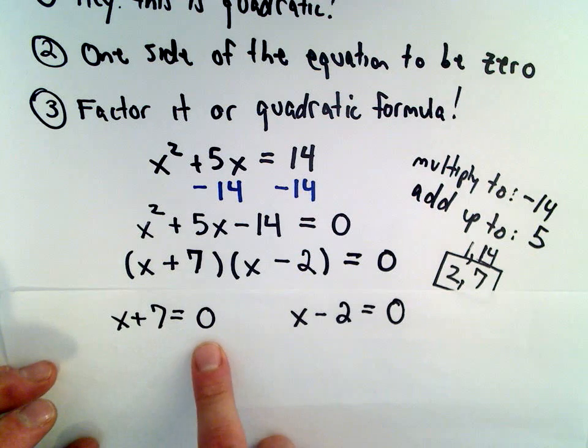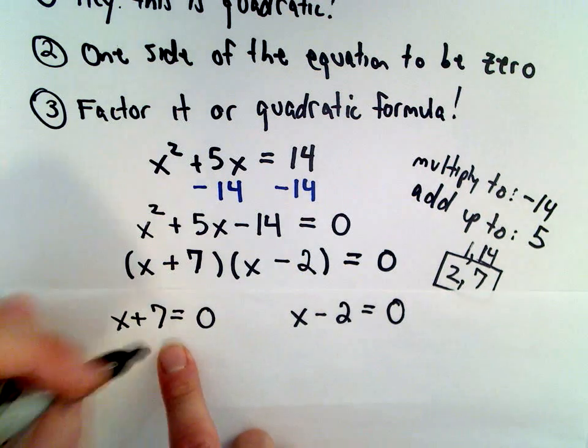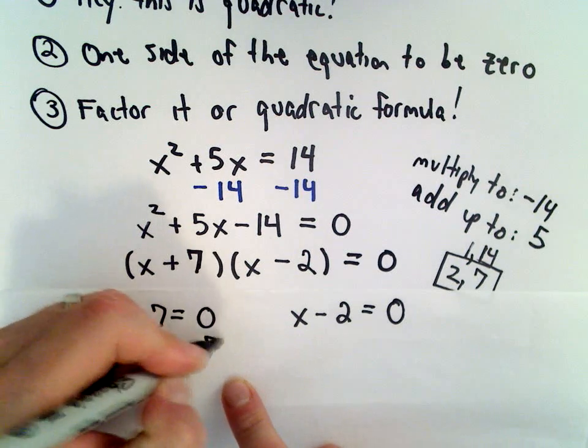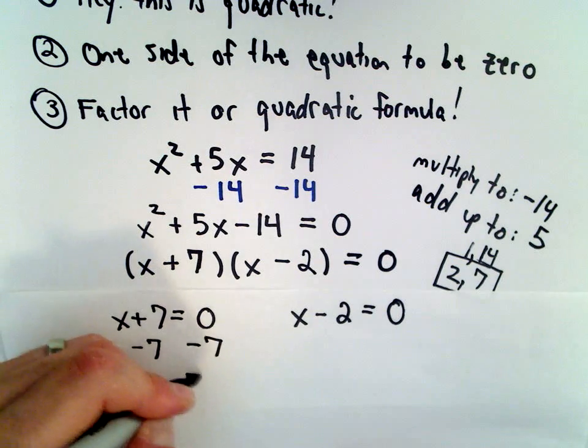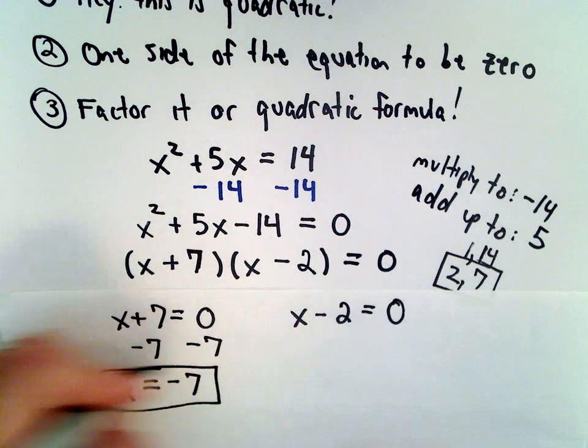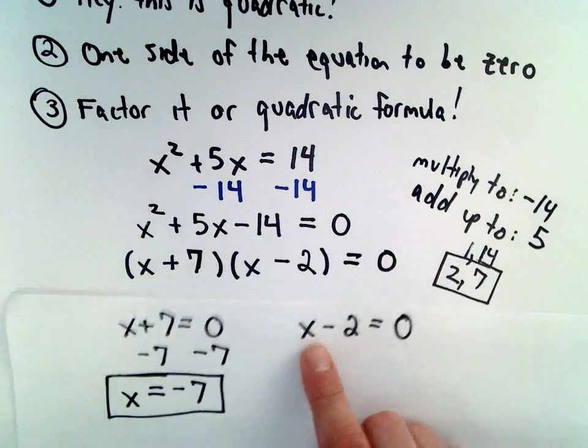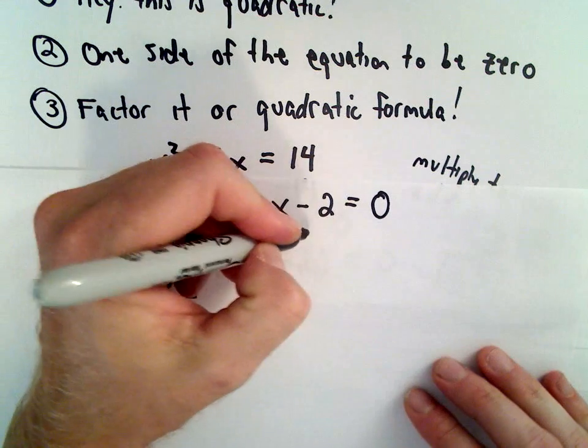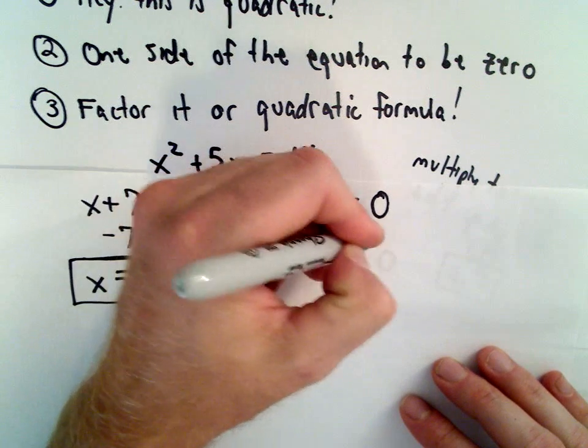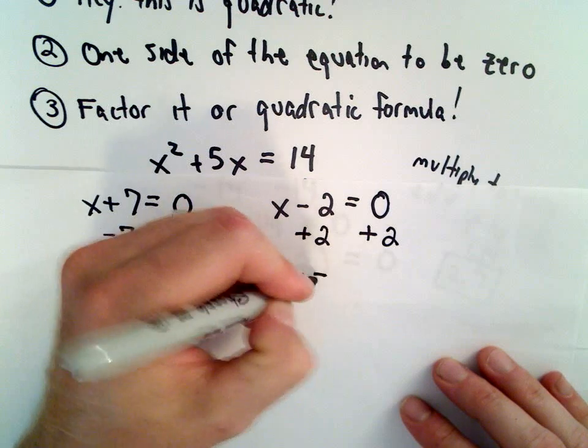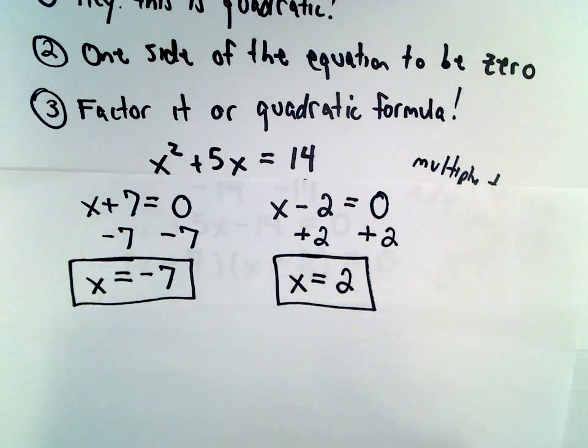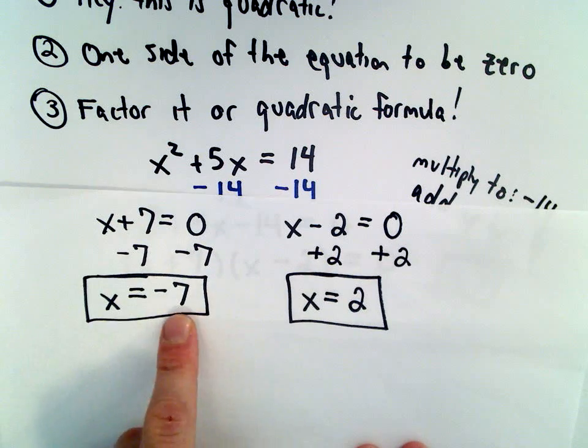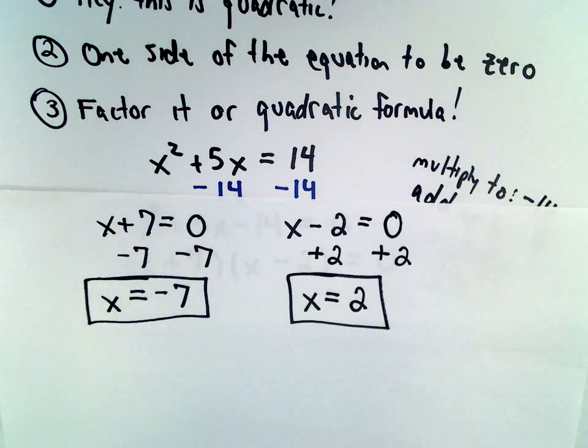Well, in my first equation, to get x all by itself, I'm just going to subtract 7 from both sides. Well, 0 minus 7 is going to be negative 7, so that's going to be one of my solutions. And then I have x minus 2 equals 0. Well, I'm going to add 2 to both sides, and that's going to give me the other solution of x equals positive 2. So, now we've got our two distinct solutions, x equals negative 7 and x equals positive 2.